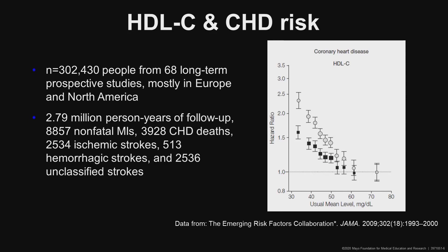There's data from many studies showing clearly that HDL cholesterol levels are inversely related to cardiovascular risk. This is one of the largest such studies, the Emerging Risk Factors Collaboration, which included more than 300,000 patients from 68 long-term prospective studies. You can see clearly that HDL levels on the x-axis are inversely related to the hazard of coronary heart disease events on the y-axis. The upper bars are for unadjusted HDL cholesterol and the lower bars indicate the relationship after adjustment for relevant covariates, and you can see even after adjustment there's a strong inverse relationship.